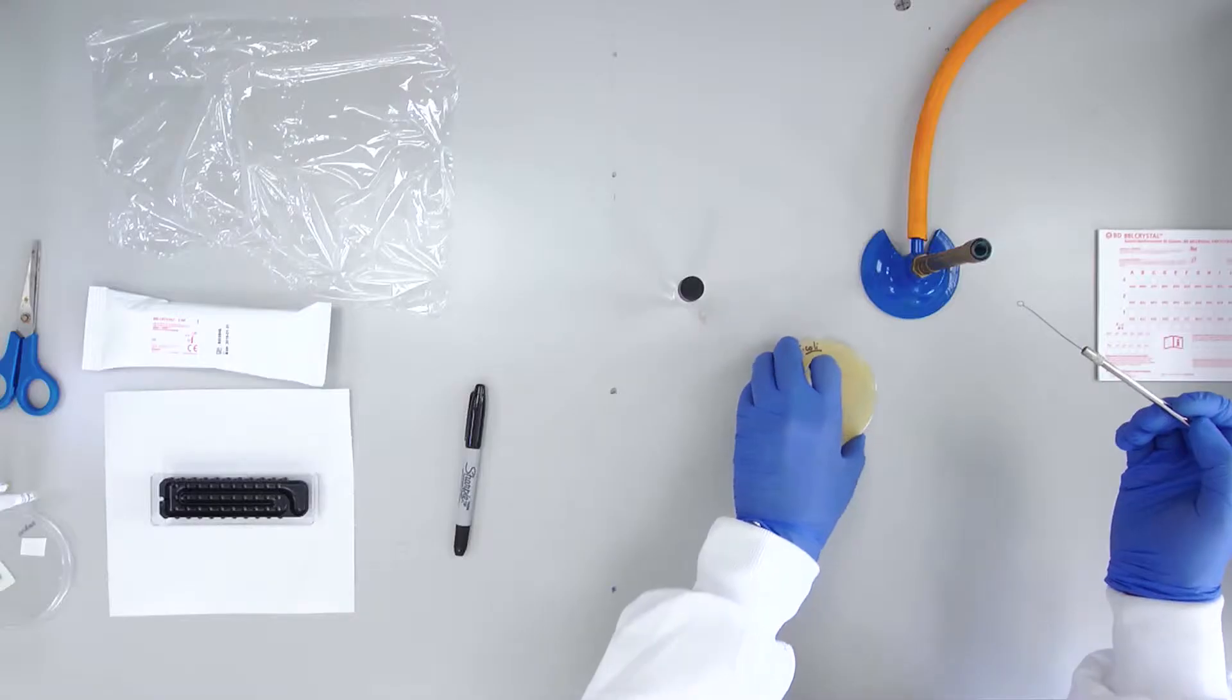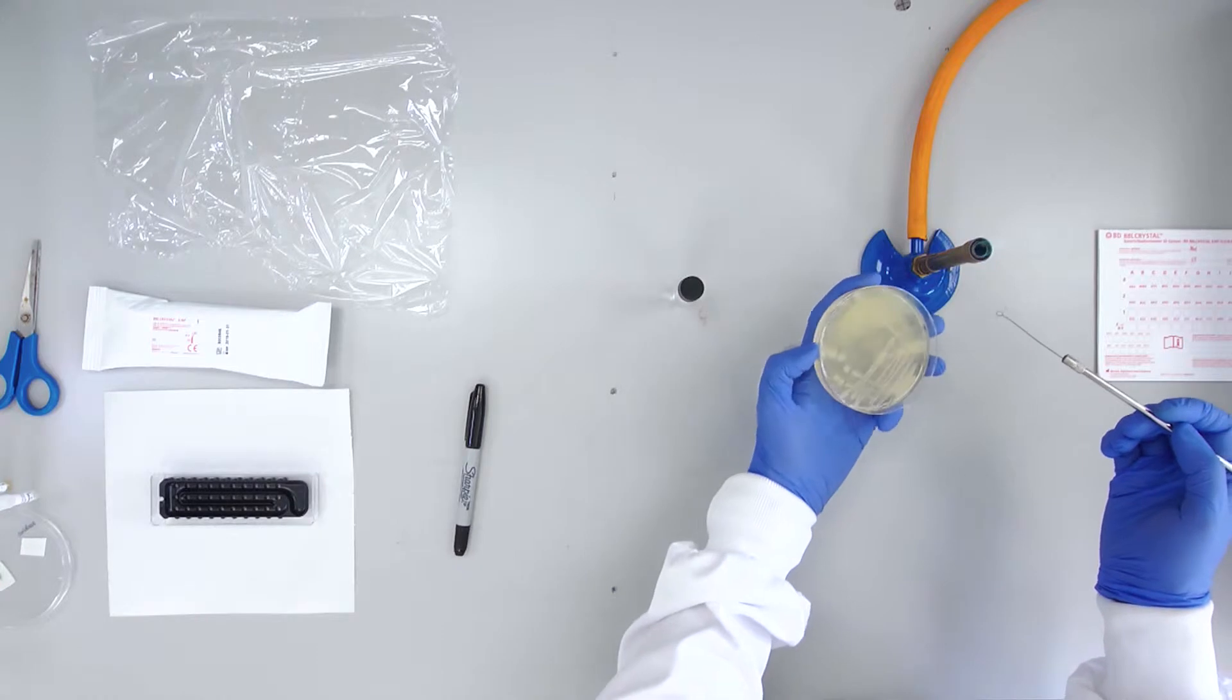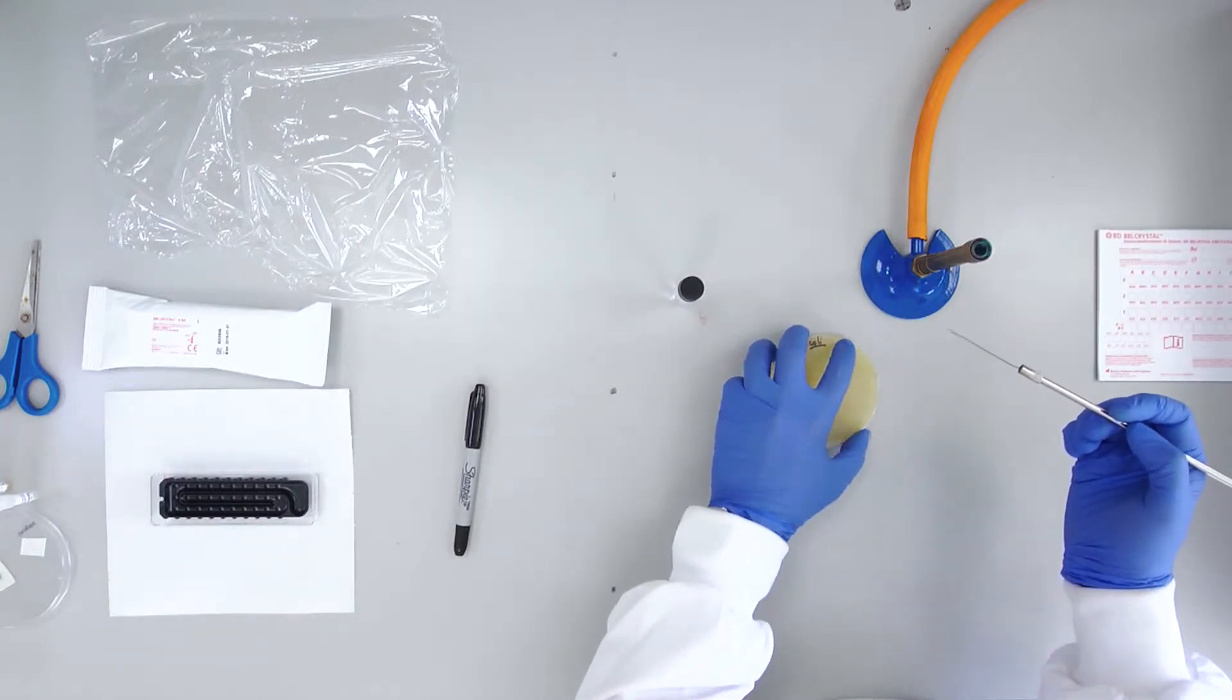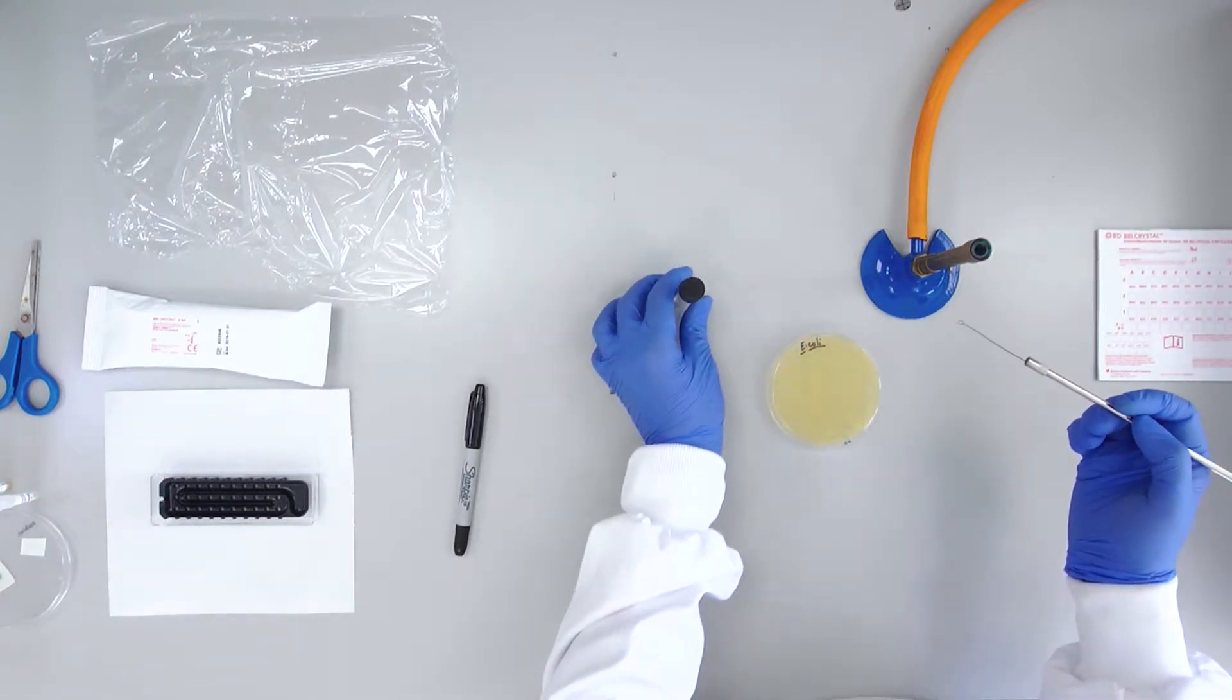Select a large isolated colony from the plate. Aseptically suspend the colony in the BBL diluent supplied.